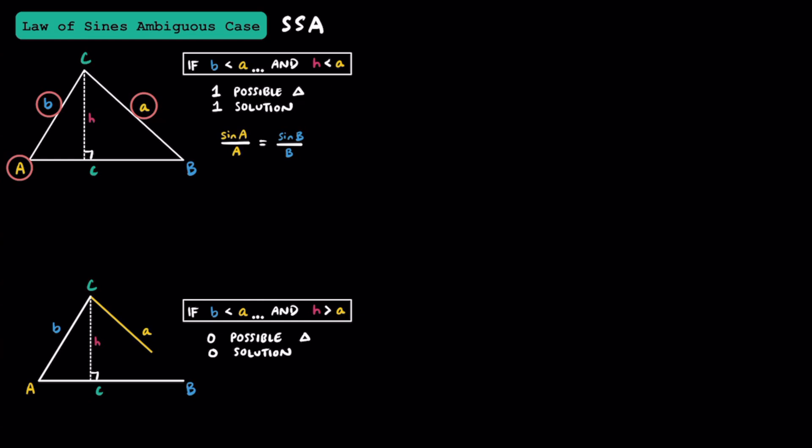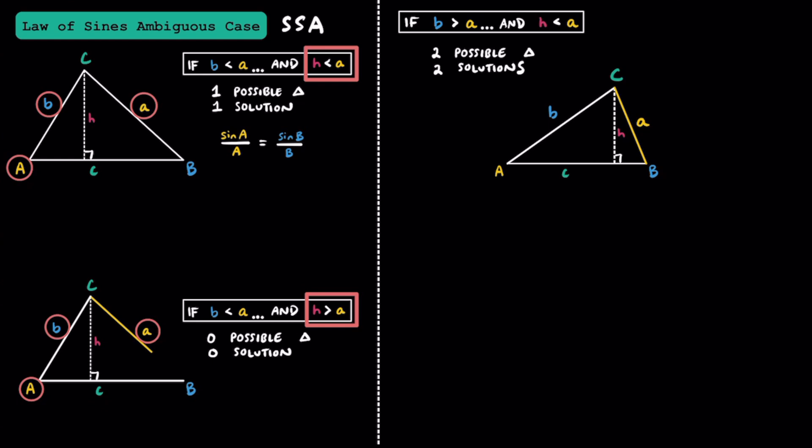Now let's look at a slightly different scenario. Given angle A, the adjacent side b, and the opposite side a — if the height is longer than side a, then it's not possible to actually create a triangle. For this scenario, we can't finish drawing a triangle and we won't have a solution. The key difference is: when the height is shorter than side a, we have one possible triangle; when the height is greater than side a, we can't possibly create a triangle.